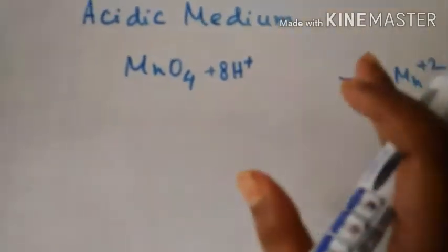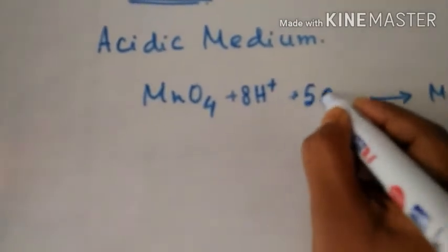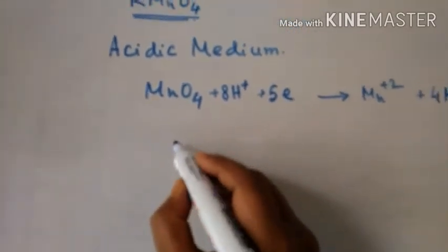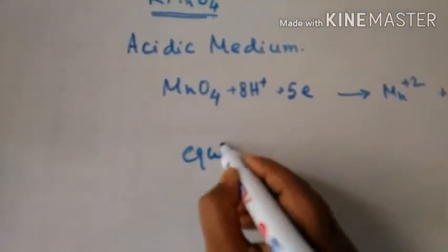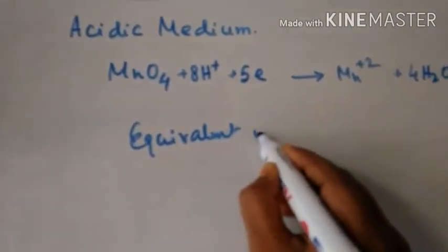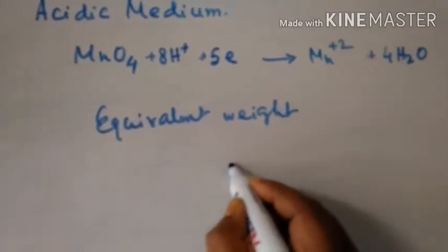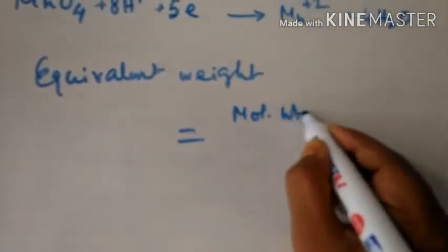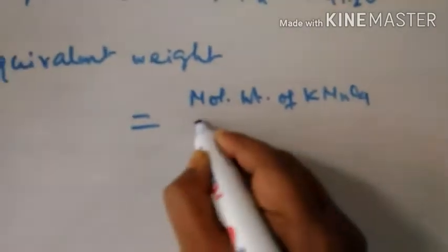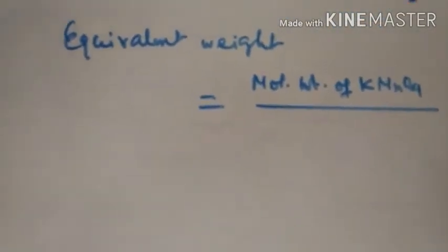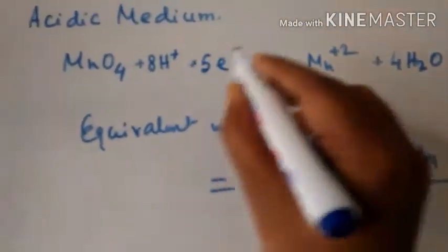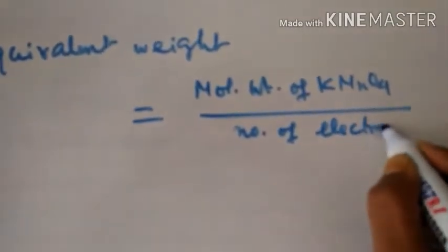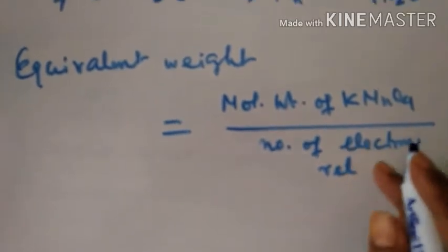To calculate the equivalent weight, the formula is molecular weight of KMnO4 divided by the number of electrons participating in this reaction. The number of electrons released or gained—here it is gained.